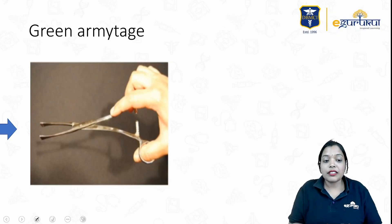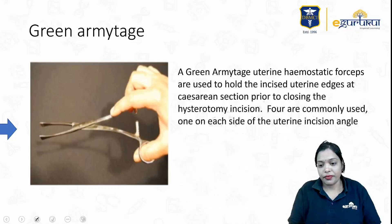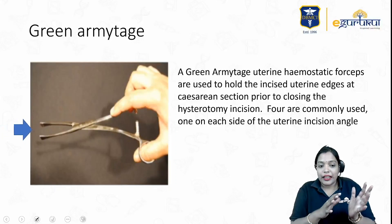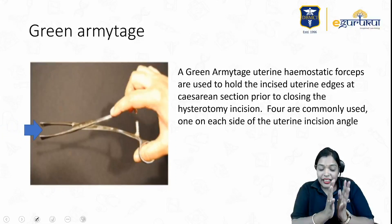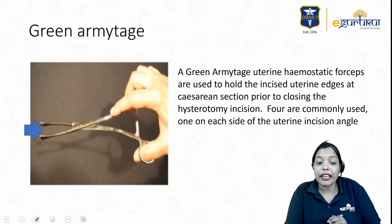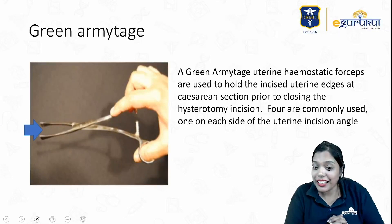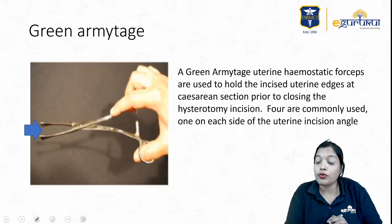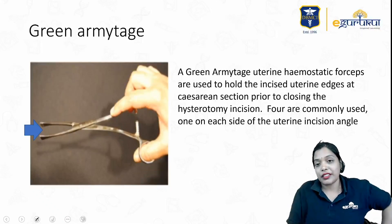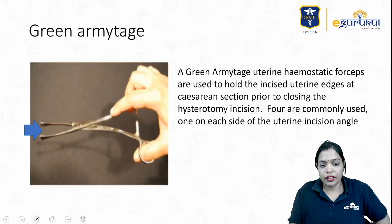Next is Green Armitage. At the end, if you see, there is a triangle. It is mainly hemostatic in nature and is used for holding the uterine edges during caesarean section.